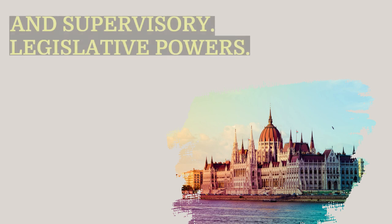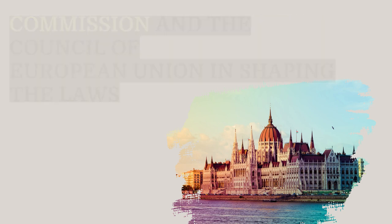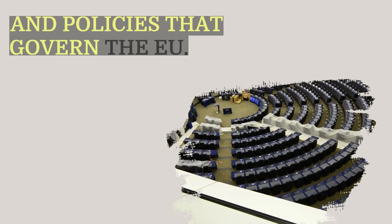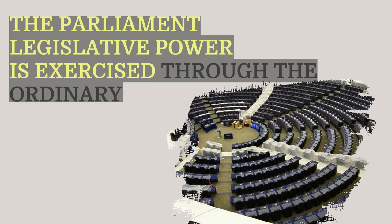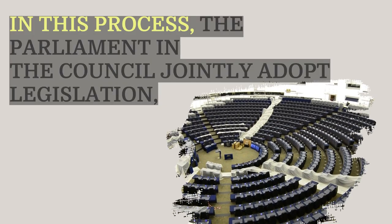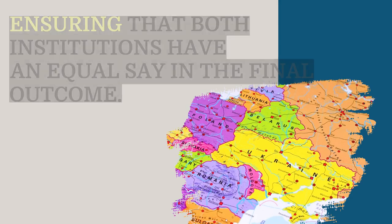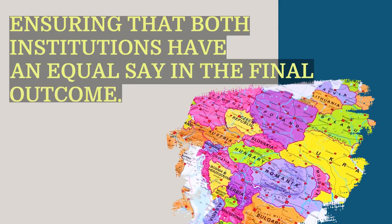Regarding legislative powers, the European Parliament works closely with the European Commission and the Council of the European Union in shaping the laws and policies that govern the EU. The Parliament's legislative power is exercised through the ordinary legislative procedure, also known as co-decision. In this process, the Parliament and the Council jointly adopt legislation, ensuring that both institutions have an equal say in the final outcome.